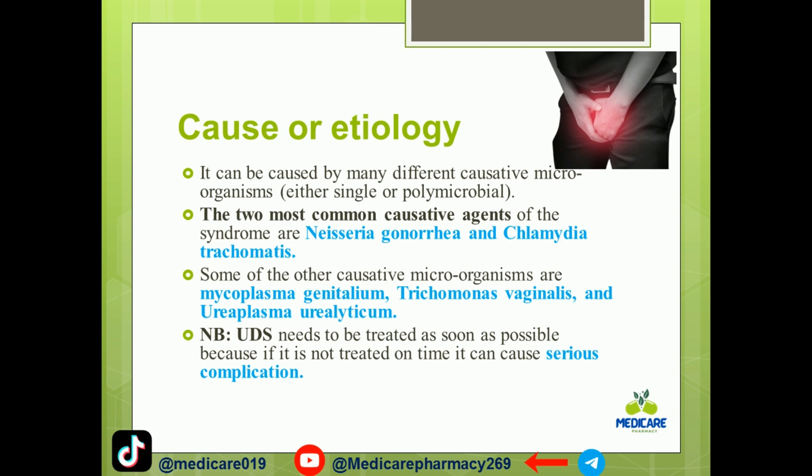The most common microorganisms are Chlamydia trachomatis and Neisseria gonorrhea, both of which are sexually transmitted infections. Some of the other causative microorganisms include Mycoplasma genitalium, Trichomonas vaginalis, and Ureaplasma urealyticum.